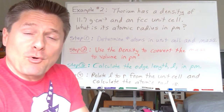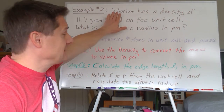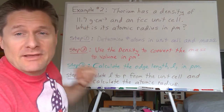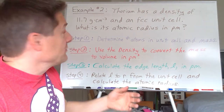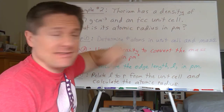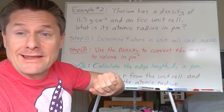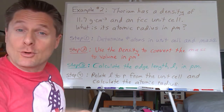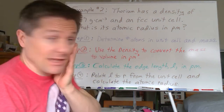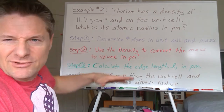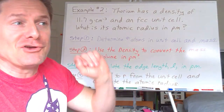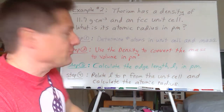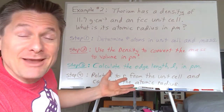Here is our second type of problem where we're going to solve for the atomic radius. Let's take thorium, for example. Thorium has a density of 11.7 grams per centimeter cubed and has a face-centered cubic unit cell — what is the atomic radius? Typically those are in picometers. The International Union of Pure and Applied Chemistry is trying to get away from angstroms, so we'll stick with picometers since most tables today are in picometers.